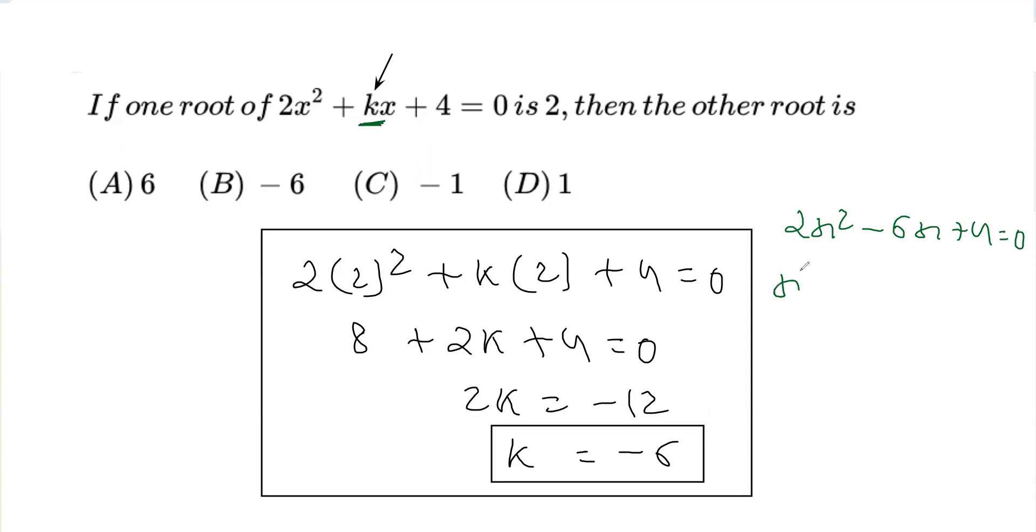We can take 2 common to reduce this equation. Taking 2 common, it becomes x² - 3x + 2 = 0.